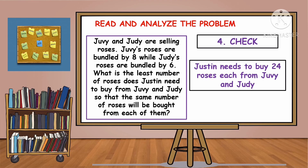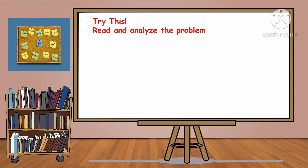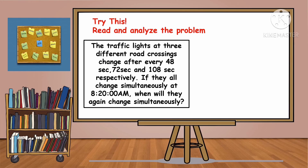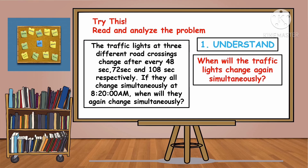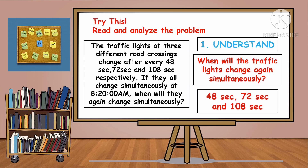Let's try another example. Read and analyze the problem. It is most important that we read and analyze the problem first. The problem is: The traffic lights at 3 different road crossings change after every 48 seconds, 72 seconds, and 108 seconds respectively. If they all change simultaneously at 8:20 AM, when will they again change simultaneously? The first step is to understand the problem — what is asked? We are looking for when the traffic lights will change again simultaneously. The given numbers are 48 seconds, 72 seconds, and 108 seconds.